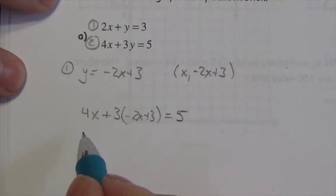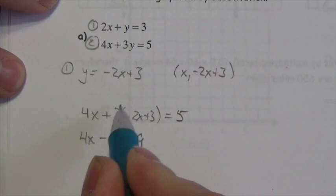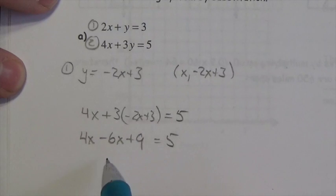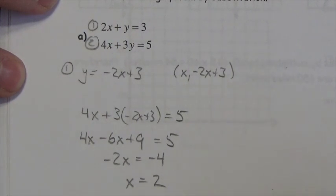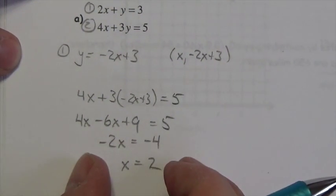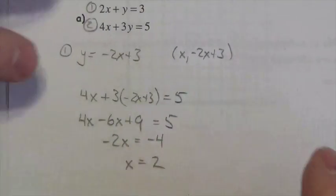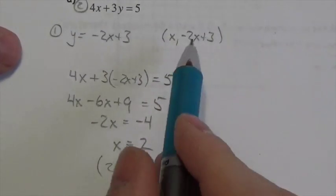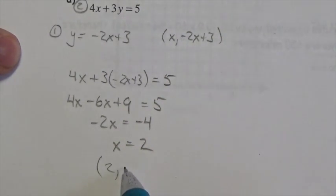I distribute the 3 through to get 4x minus 6x plus 9 equals 5. Four x minus 6x is negative 2x. Bring the 9 over and I get negative 4. So x is equal to positive 2. If x is equal to positive 2, I go back to the expression I found and plug that in: negative 2 times 2 is negative 4, plus 3 is negative 1.